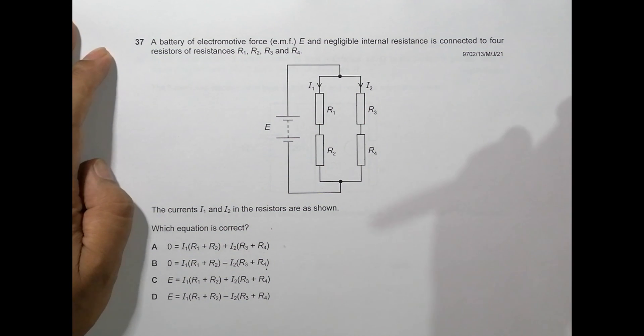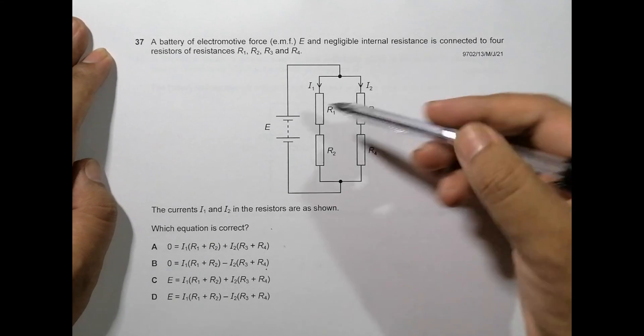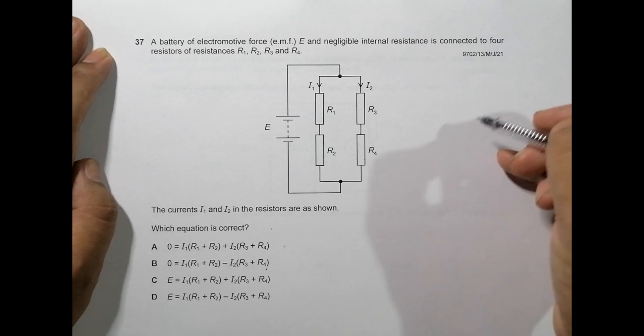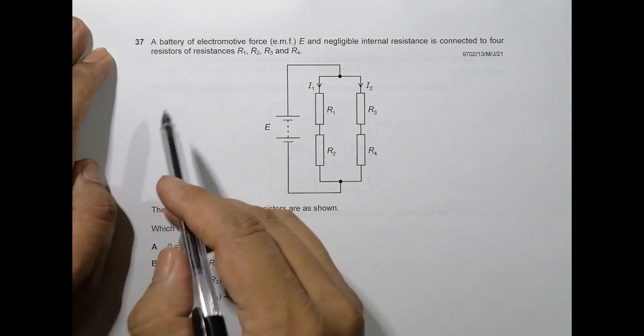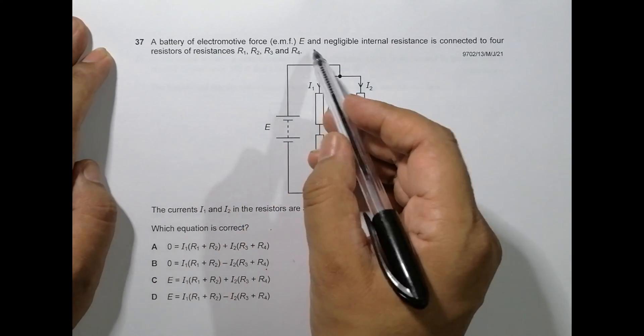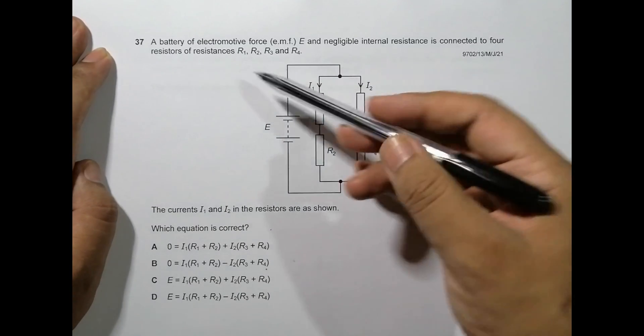Hello folks, today I have new questions from the May-June exam of 2021. The first question of that series is question number 37 from paper 1313. This question is concerned with current electricity. It says that a battery of electromotive force (emf) E and negligible internal resistance is connected to four resistors of resistances R1, R2, R3, and R4.